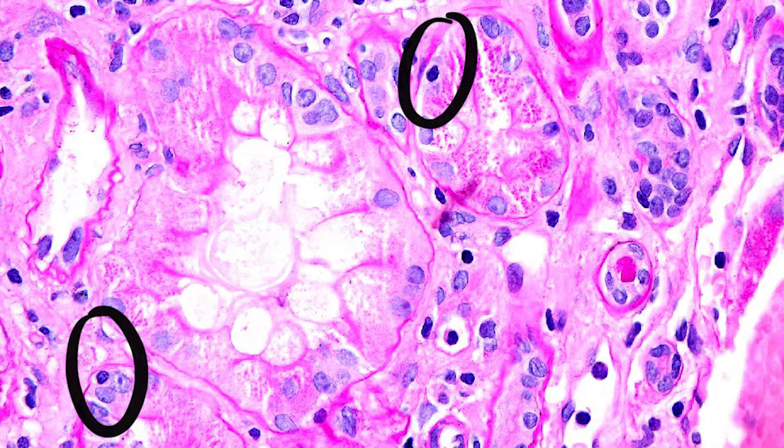Borderline criteria also includes I1 with T1 to T3, or T1 with I2 to I3. Additionally, Banff still allows for the diagnosis of borderline with T0 and I1 as allowed in prior iterations of the criteria; however, this must be stipulated in the report. Most pathologists like to retain the criteria of an I1 to make the diagnosis.